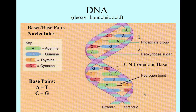Now, DNA has three parts to it. On these outer rungs of the ladder, you have these purple regions — these are called deoxyribose sugar regions. And then you have these light blue regions — these are called phosphate regions. And then on the inside, or the steps, you have these nitrogenous bases.